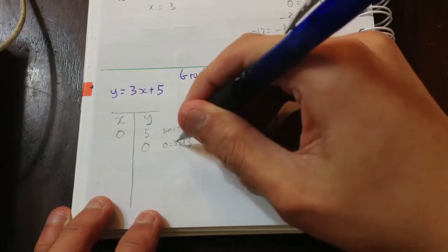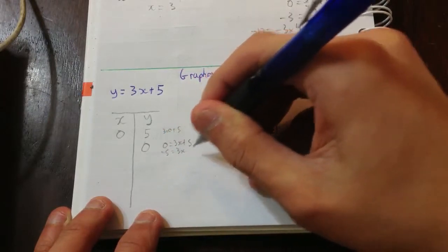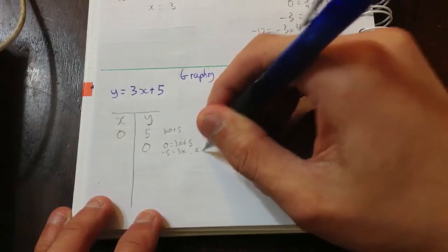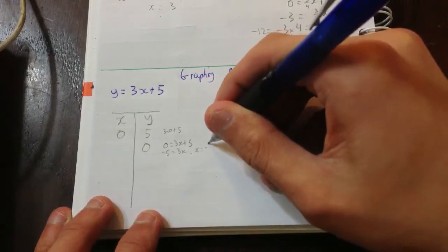we need to solve 0 equals 3x plus 5. Therefore, minus 5 equals 3x. Therefore, x equals minus 5 on 3.